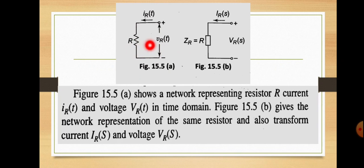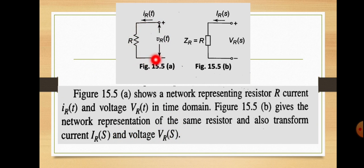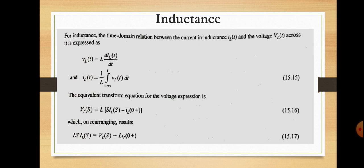In the transform domain circuit, instead of R we write Zr, but the value of Zr equals R itself. Instead of ir(t) and Vr(t), we show ir(s) and Vr(s). Figure 15.5a shows the network representing resistor R with current ir(t) and voltage Vr(t) in the time domain. Figure 15.5b shows the transform domain representation with ir(s) and Vr(s).